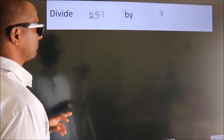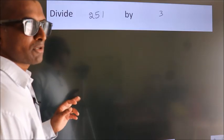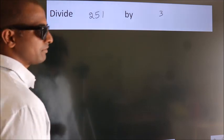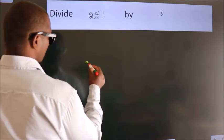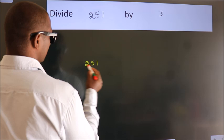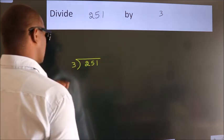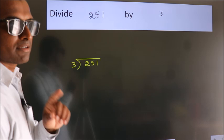Divide 251 by 3. To do this division, we should frame it in this way. 251 here, 3 here. This is your step 1.